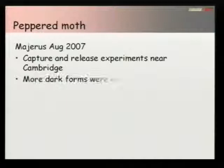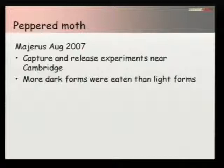What he found was that the story seems to be confirmed — more dark forms are eaten than light forms. Contrary to what had been said before, at one time there was evidence suggesting the moths didn't actually land on tree trunks at all, so birds couldn't eat them. But in fact he found they do tend to land on the trunk as well as on the branches, and as far as that part of the story is concerned, it seems to be confirmed.